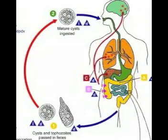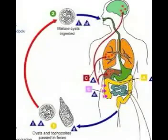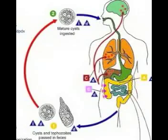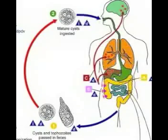The life cycle of Entamoeba histolytica begins when cysts and trophozoites, which are immature cysts, are passed through the colon and expelled in feces. The cysts are typically discovered in formed stool with trophozoites being found in diarrheal stool. Infection then occurs when an individual ingests mature cysts through fecally contaminated food, water, or hands.